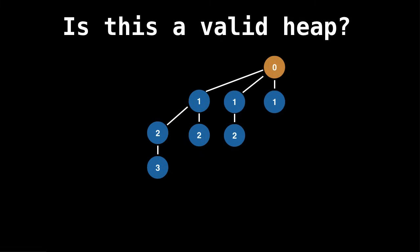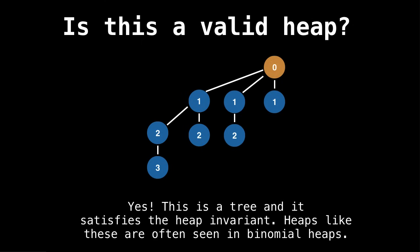Is this structure a heap? Yes, it is a heap because it satisfies the heap invariant and it is a tree. So we often see heaps like these in what are called binomial heaps. Note that heaps aren't necessarily binary heaps. They can have any number of branches.